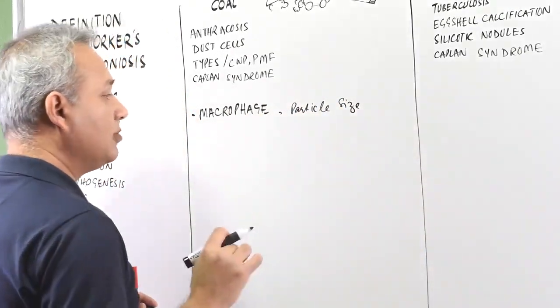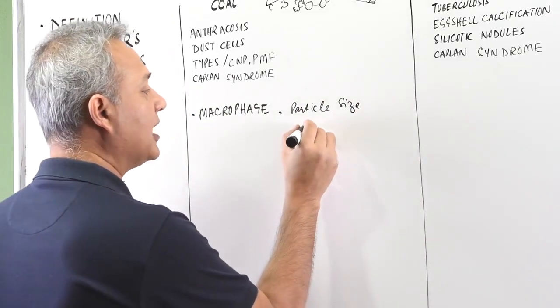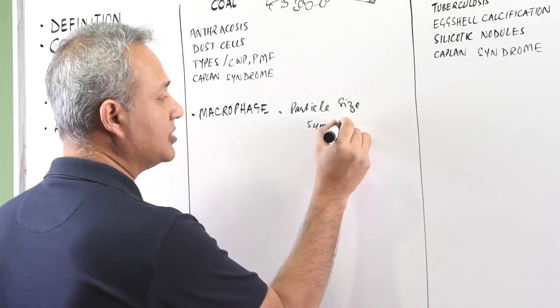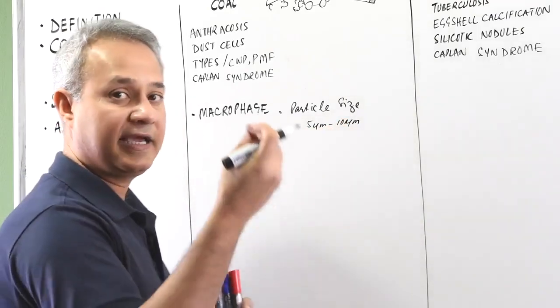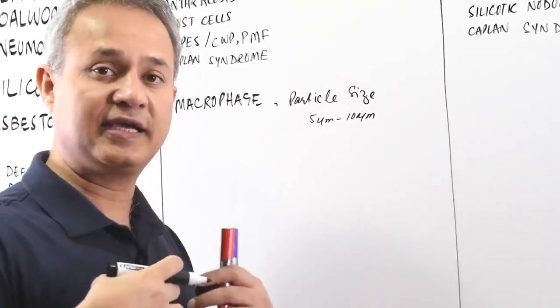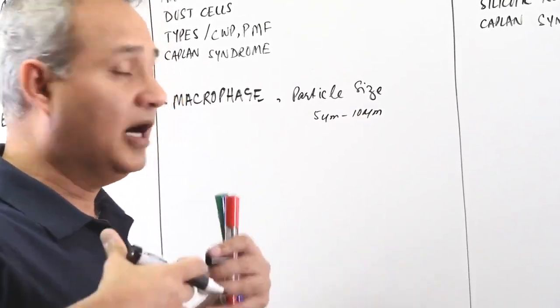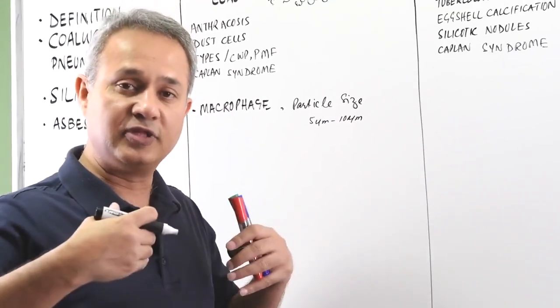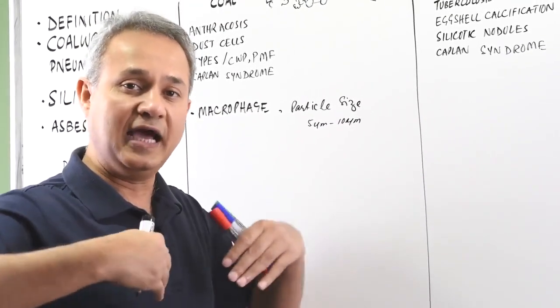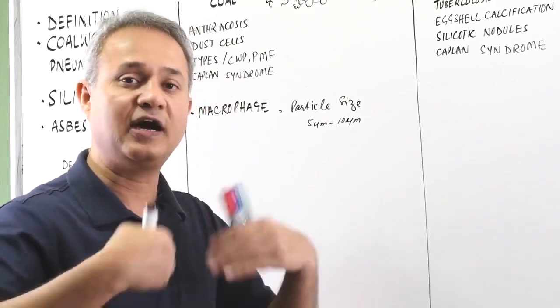What does that mean? Normally the particles that are 5 micrometer to 10 micrometer, they can be inhaled but they get trapped into the larger airways and from there, mucociliary elevator brings them back. We cough them out again.